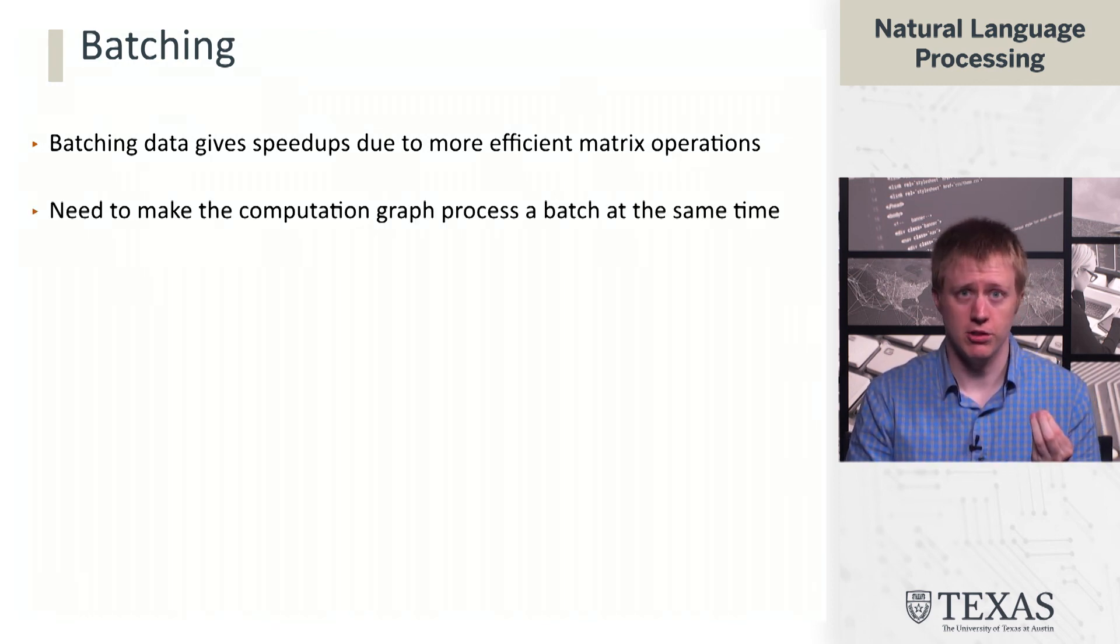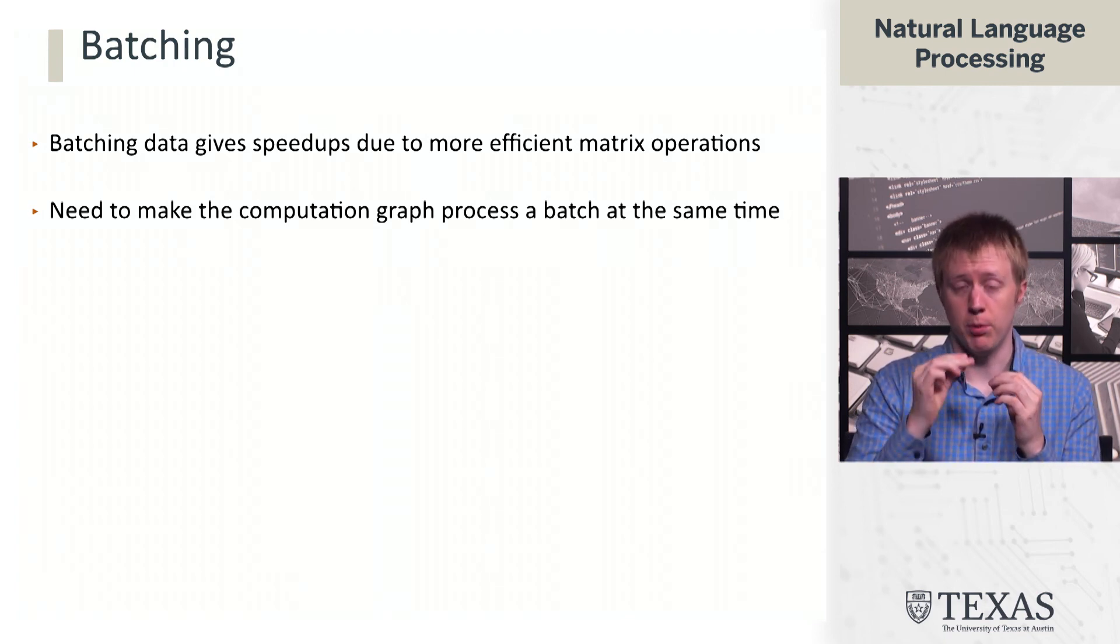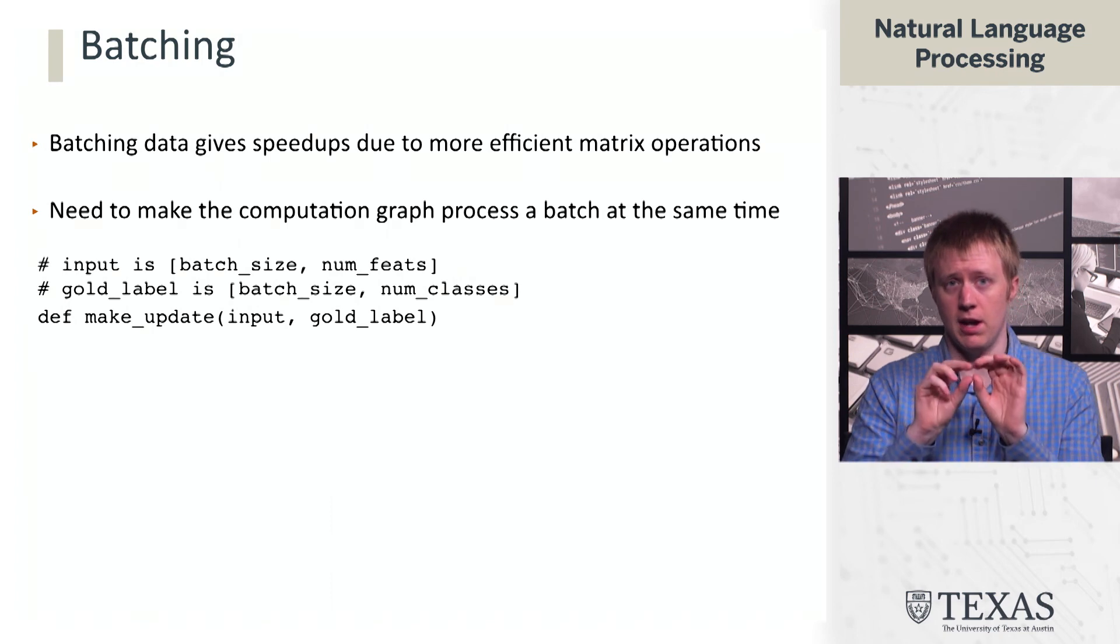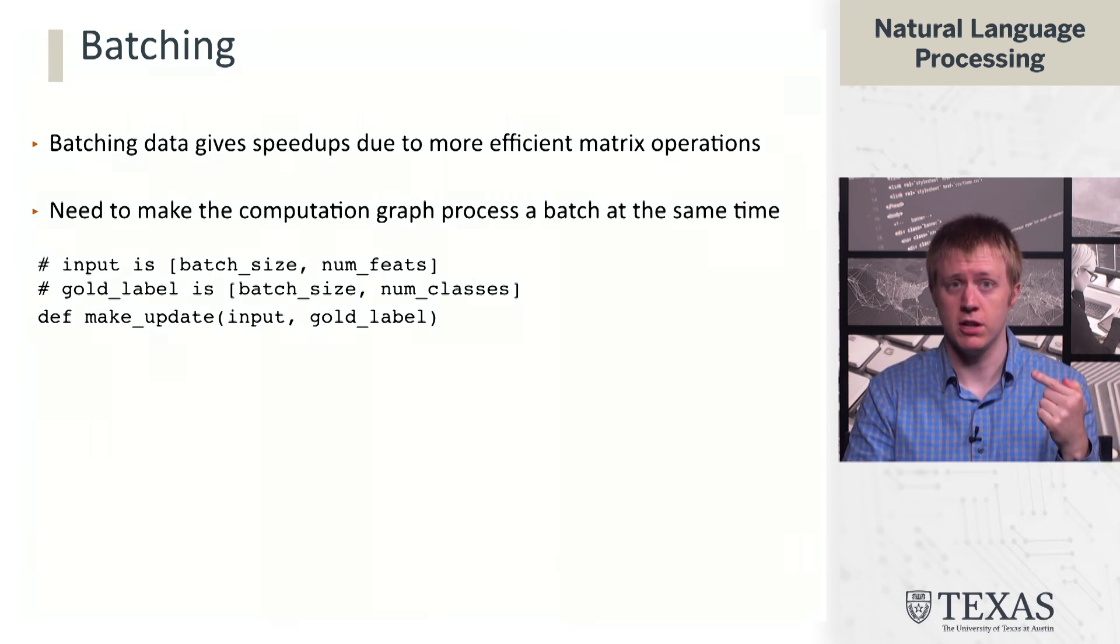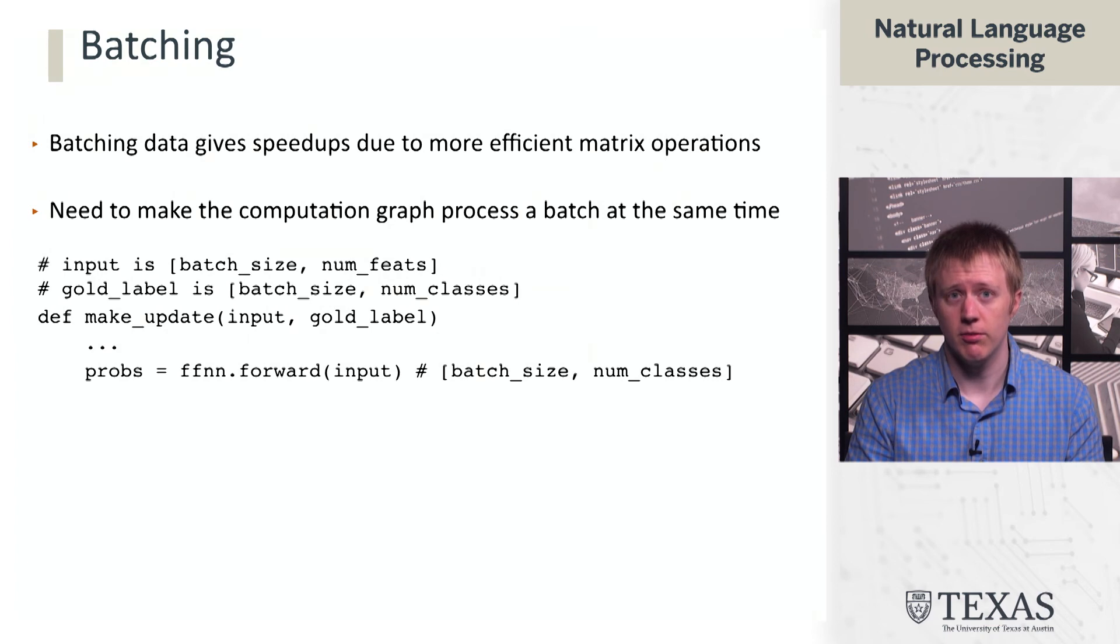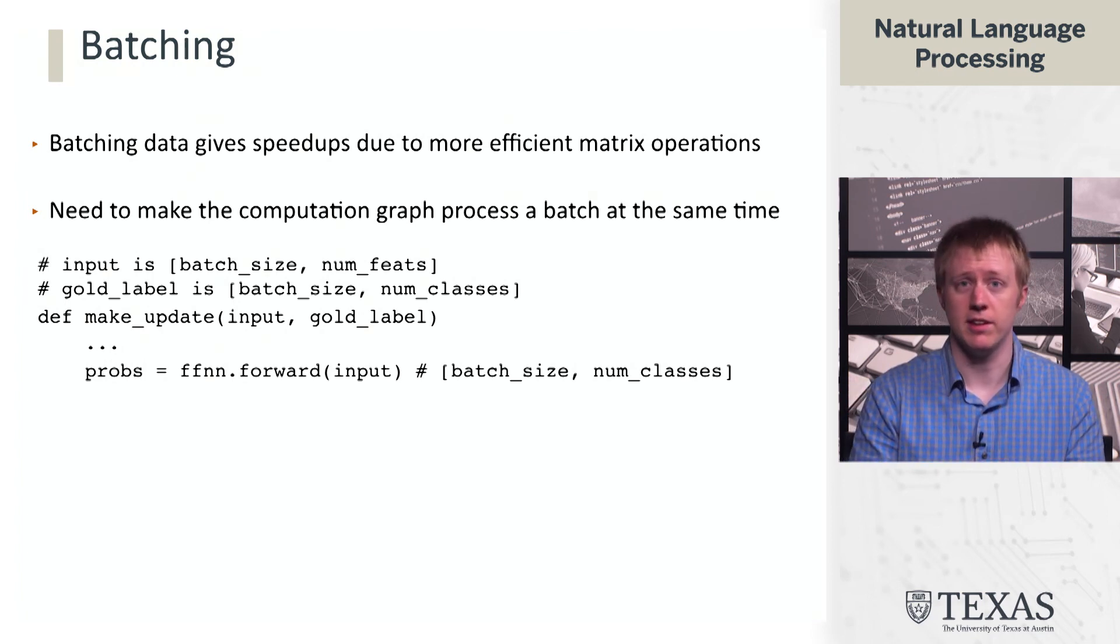This does actually require making the computation graph be able to take not just one data point, but actually a whole bunch of them. However, this is not too difficult in PyTorch because of the way that everything is structured in terms of tensors. Instead of thinking about an input which is just a number of features and a gold label which is just a number of classes, both vectors, now we're going to think about these as matrices where we have an extra dimension which reflects the batch size. It turns out that the forward implementation for this network does not need to change at all. Everything that exists in the running example we have so far generalizes seamlessly to this case, and what happens now is the probabilities that we get are now a matrix where each row is a different example in the batch.